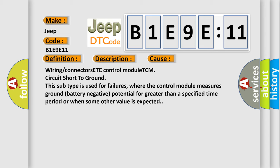This subtype is used for failures where the control module measures ground battery negative potential for greater than a specified time period or when some other value is expected.